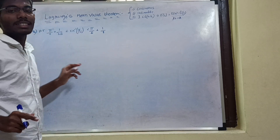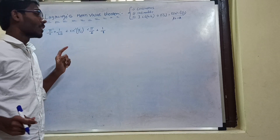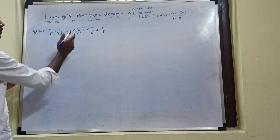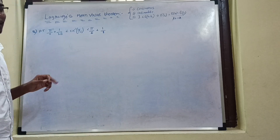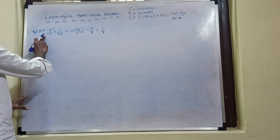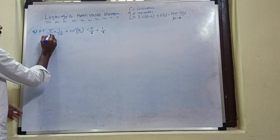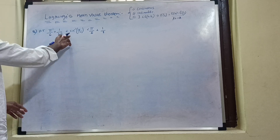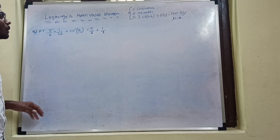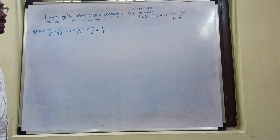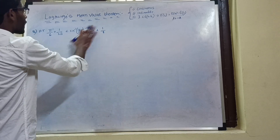Here the inequalities are crystal clear. We need to prove that 5π/6 + 1/(5√3) is less than sin⁻¹(3/5), and sin⁻¹(3/5) is less than π/6 + 1/8. So here, we just take a function and directly apply Lagrange's Mean Value Theorem.